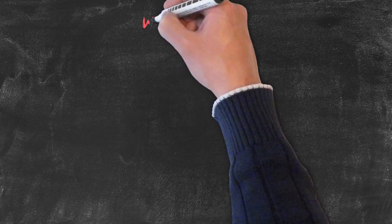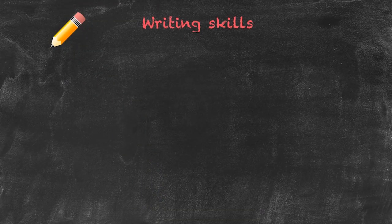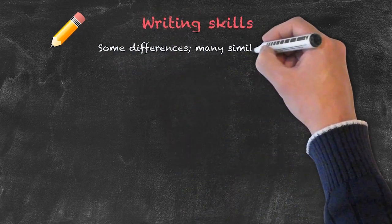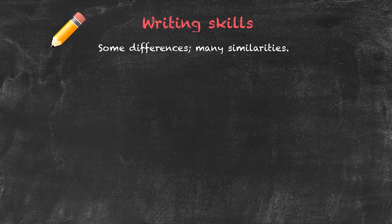We're now going to move on to the second of the productive skills, which is writing. We'll look at the background and create a typical lesson for a writing skills session. One of the things to be aware of is that writing tends to be more formal than spoken English — for example, writing very often uses less contracted forms. However, there are many similarities between the two skills, so many of the considerations for a speaking skills lesson will also apply to a writing skills lesson.